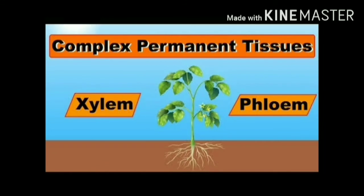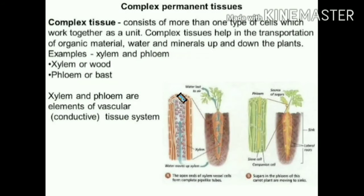Sclerenchyma provides strength to the plants. The tissues discussed so far — parenchyma, colenchyma, and sclerenchyma — are all made up of one type of cell and are called simple permanent tissues. Another type of permanent tissue is complex tissue. Complex tissues are made up of more than one type of cell, all coordinated to perform a common function. Examples are xylem and phloem.